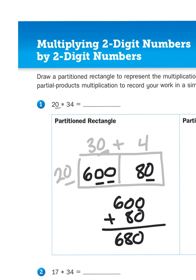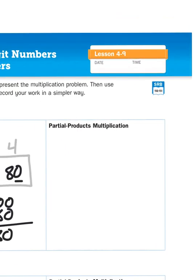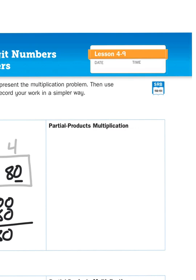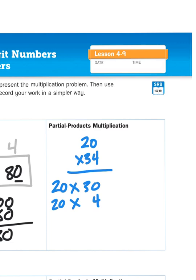Now let's try that problem again in the partial products method. Same setup. So I'm going to multiply 20 times 30, I'm going to multiply 20 times 4. And that gives me the same partial products. And then I add them together. Get my total of 680. So far so good, right?